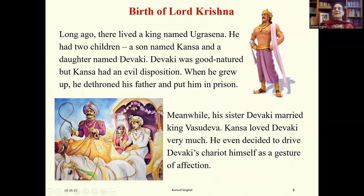Now I'm going to tell you the story of the birth of Lord Krishna. Long ago, there lived a king named Ugrasen. He had two children — a son named Kanz and a daughter named Devaki. Devaki was good-natured but Kanz had an evil disposition. He was a cruel man, just like Ravana. When he grew up, he dethroned his father, put him in prison, and became king himself. Meanwhile, his sister Devaki married King Vasudeva. Kanz loved his sister very much.